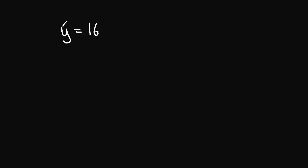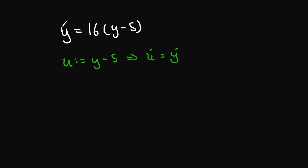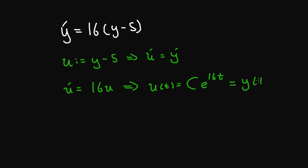The last example I'll do is solving the differential equation y prime equal to 16(y minus 5). We make a u substitution, letting u equal y minus 5. Then u prime equals y prime, giving us the new differential equation u prime equal to 16u, which implies u of t equal to Ce to the 16t. Since u equals y minus 5, this is y of t minus 5 equal to Ce to the 16t. Finally, the solution is y of t equal to Ce to the 16t plus 5.